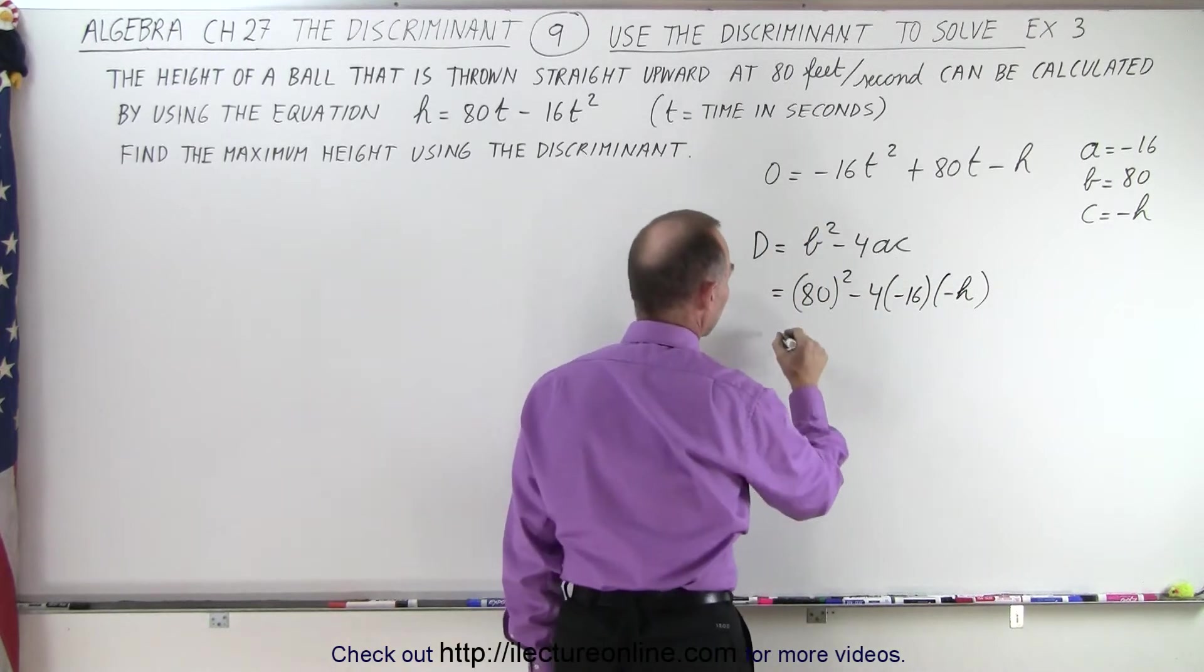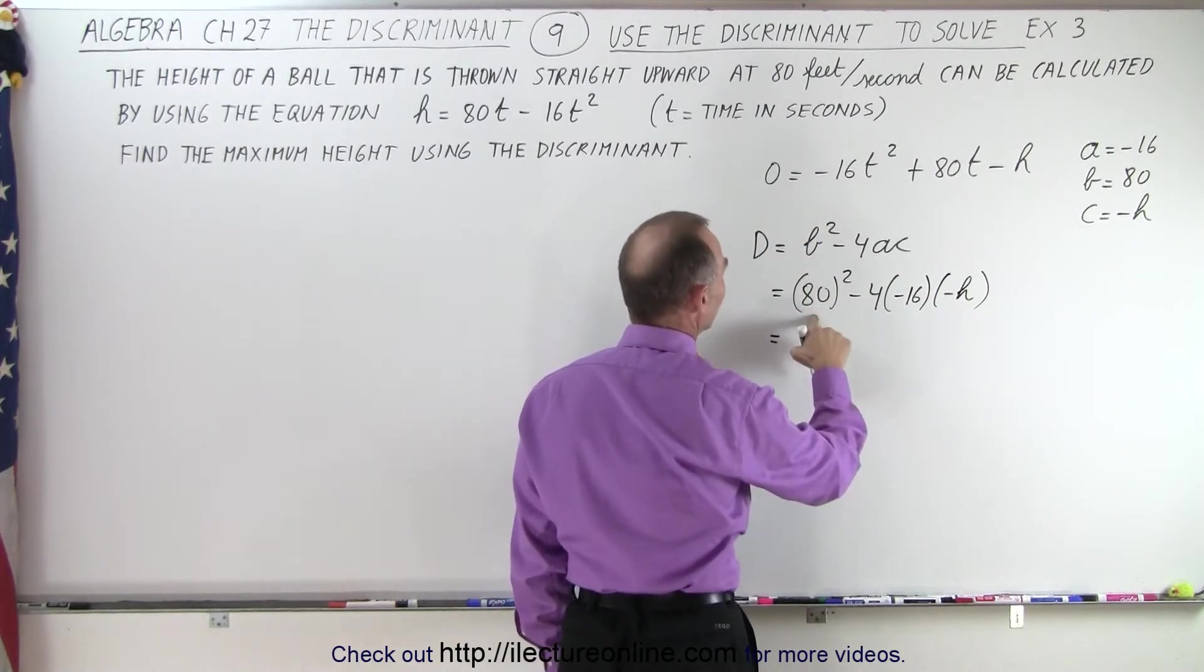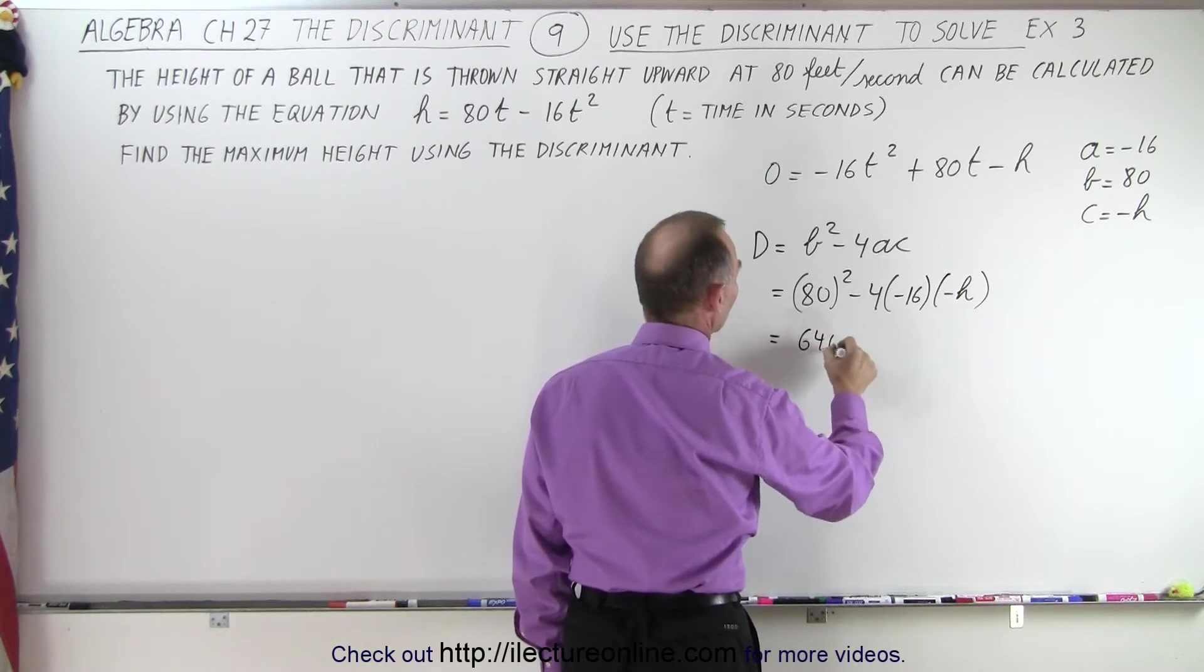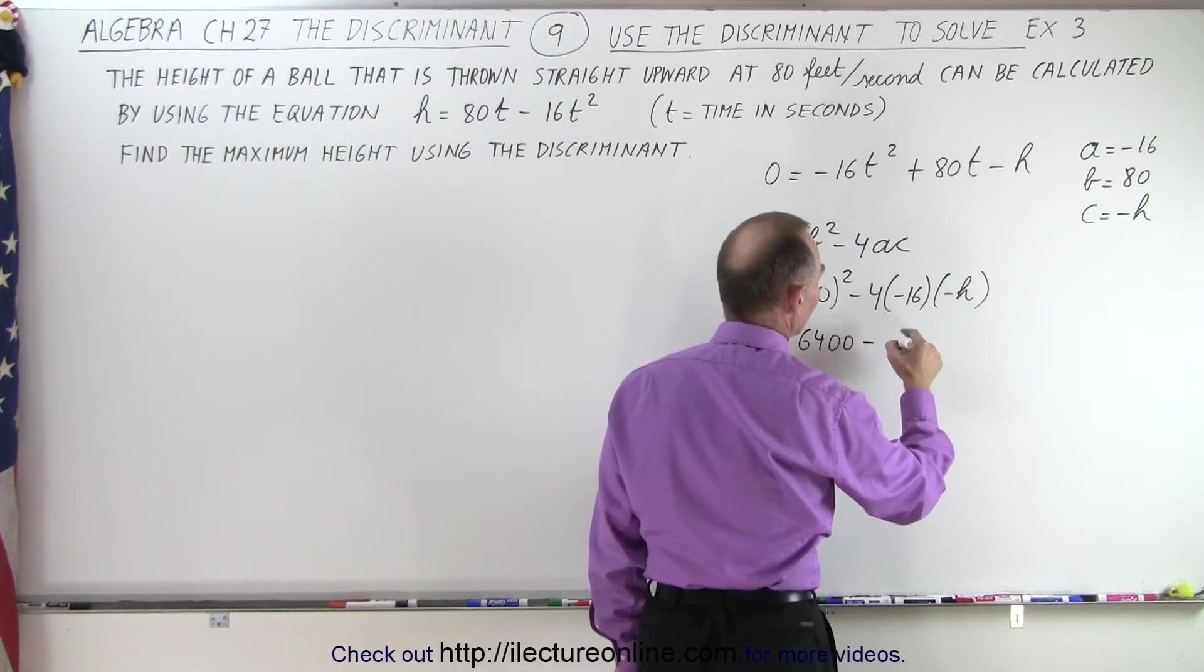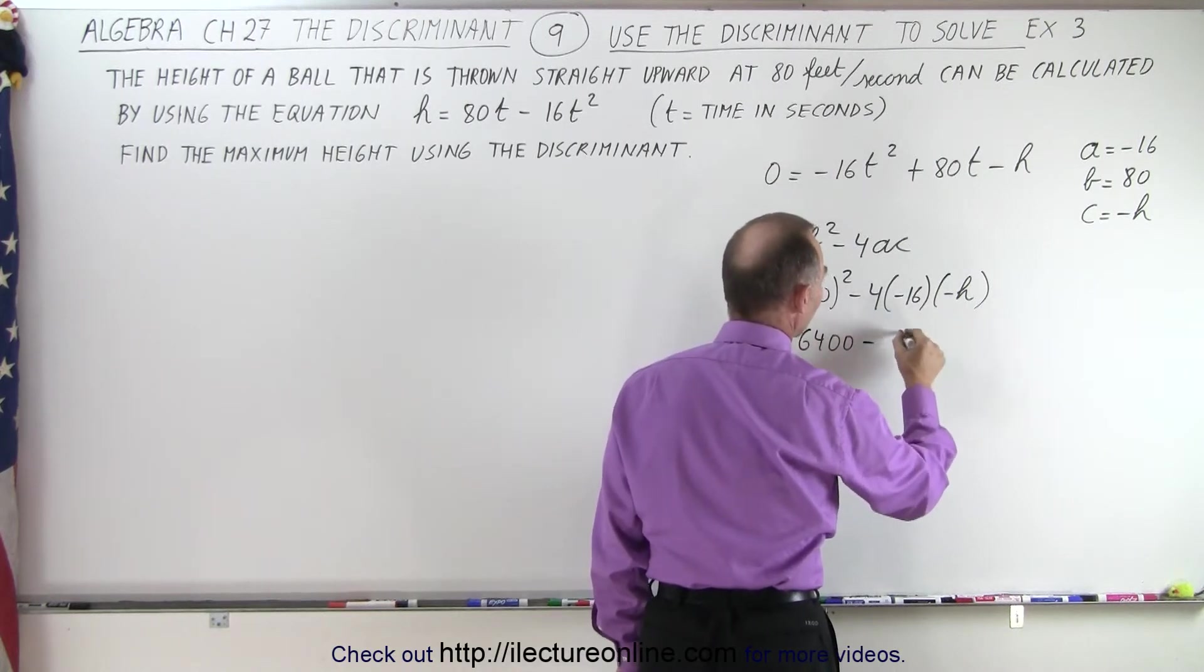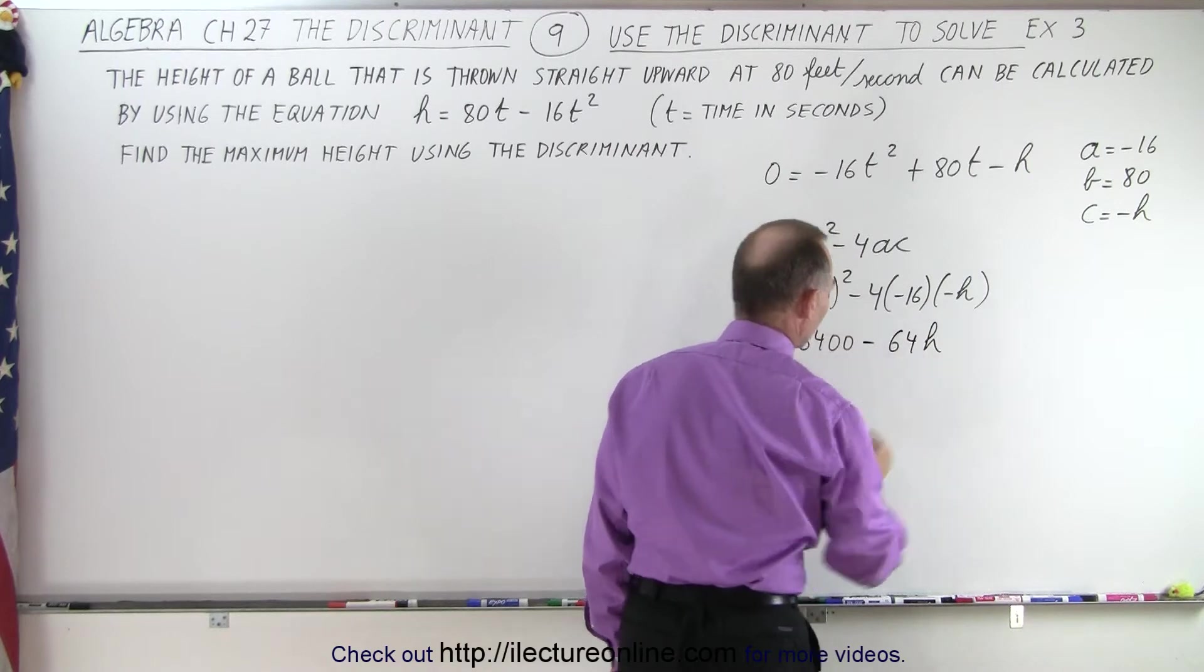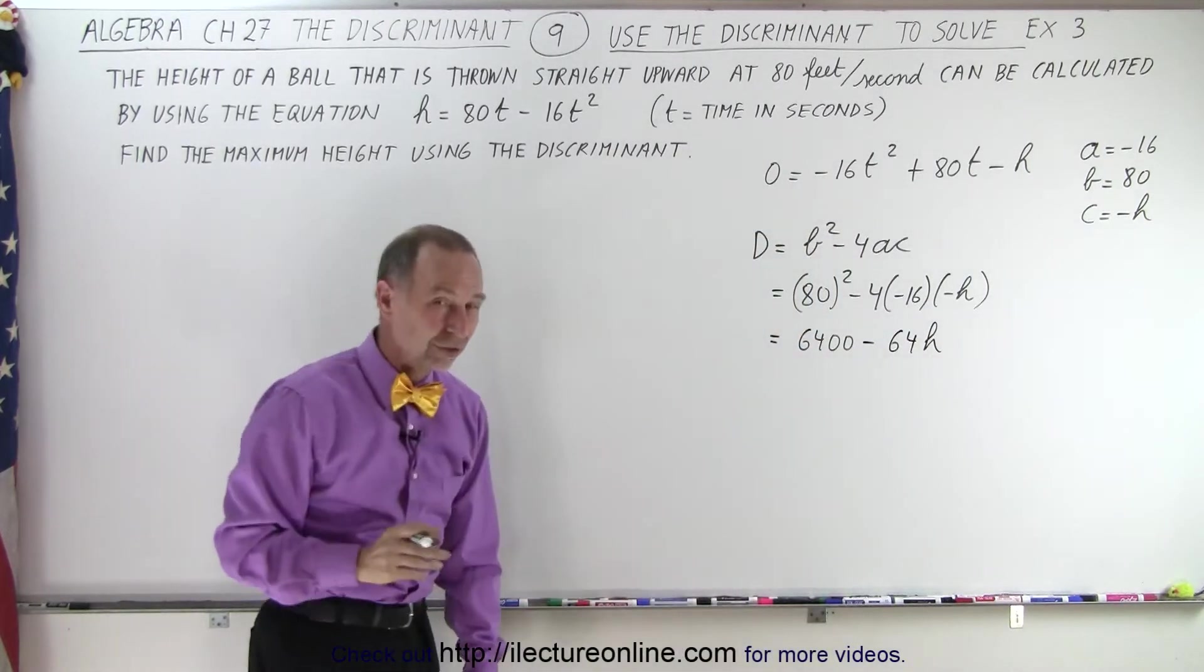Plugging that in, that is equal to 80², which would be 6400, minus 4 times that, which would be 64. That's plus, but then we have -64h. There's the discriminant.